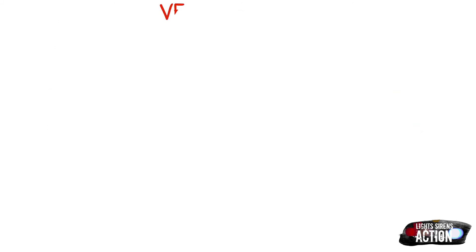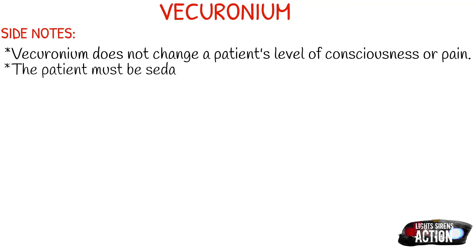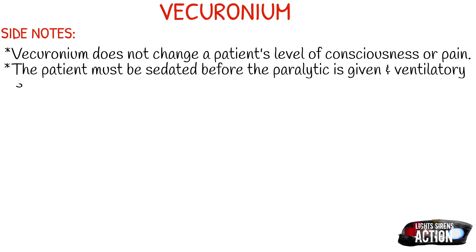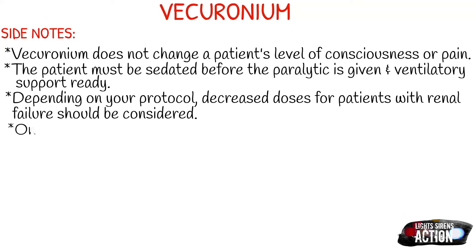A few side notes about Vecuronium: it doesn't change the patient's LOC and it doesn't change their pain sensations, so the patient knows what's going on and can feel pain. That is why it is so important that a patient must be sedated before the paralytic is given, and that sedation must be maintained and ventilatory support has to be ready. Depending on your protocol, decreased doses for patients with renal failure should be considered, and your onset is between one to three minutes.